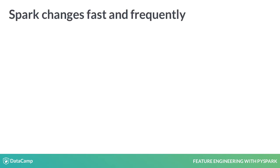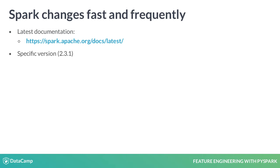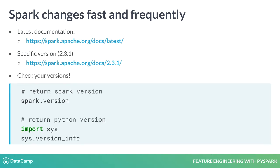Before we get started, as a cutting-edge technology, Spark changes fast and frequently. Make sure you're looking at the right version. You can always go to the latest URL by using slash latest, or put the version number — major, minor, and patch — to get a specific version. Programmatically, you can check your version of Spark with these commands. That way you can ensure you are looking at the right documentation and not using deprecated methods.